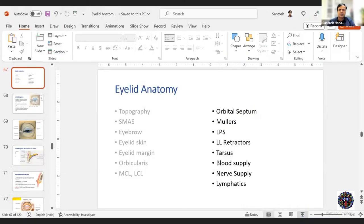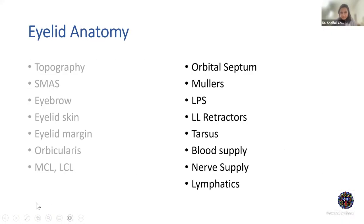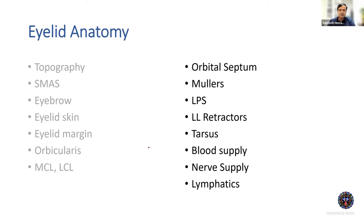In the last class I stopped short of orbital septum. I finished up to medial canthal ligament and lateral canthal ligament. Now let's cover orbital septum, Muller's muscle, levator, lower lid retractors, ptosis, and a little bit about blood supply, nerve supply, and lymphatics in the next one hour.